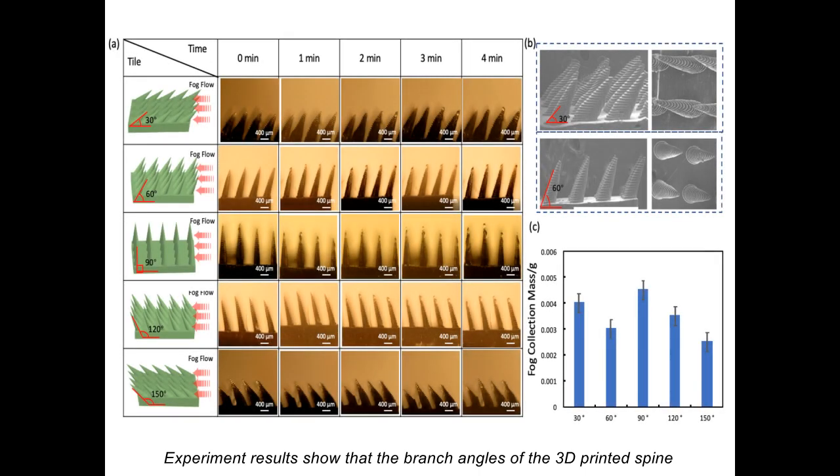Experiment results show that the branch angles of the 3D-printed spine do not affect water collection efficiency.